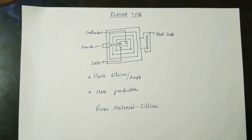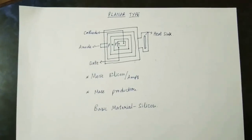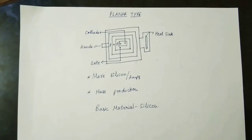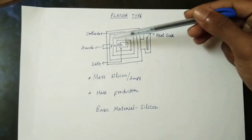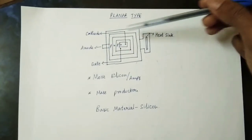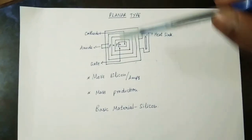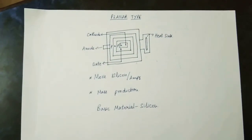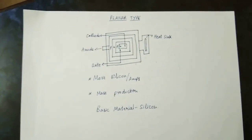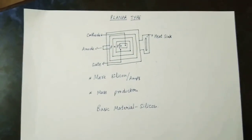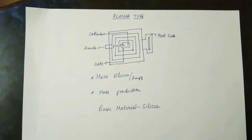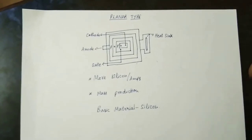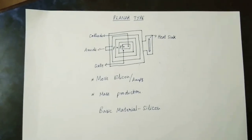The first is the planar type. With the planar type, you can use it on the surface. There are three different levels of the planar type, and you can control it.